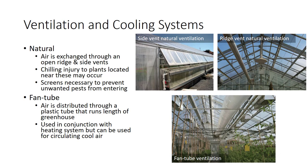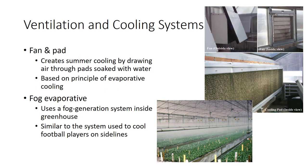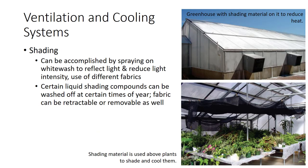In the fan tube ventilation system, air is distributed through a plastic tube with holes that run the length of the greenhouse, used in conjunction with the heating system but also for circulating cool air. The fan and pad cooling system creates summer cooling by drawing air through pads soaked with water, based on the principle of evaporative cooling. The fog evaporative system uses a fog generation system inside the greenhouse, similar to systems used to cool football players on the sideline.